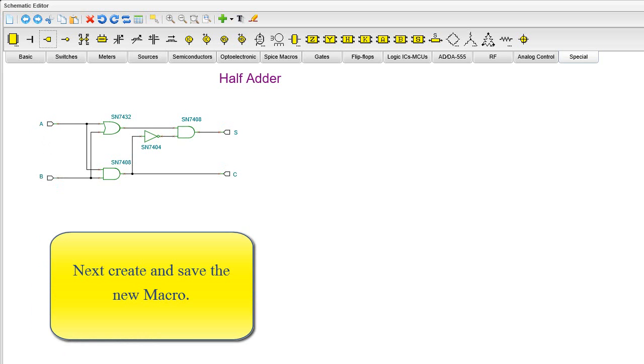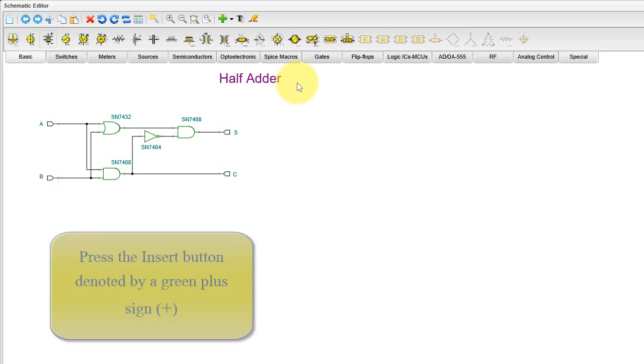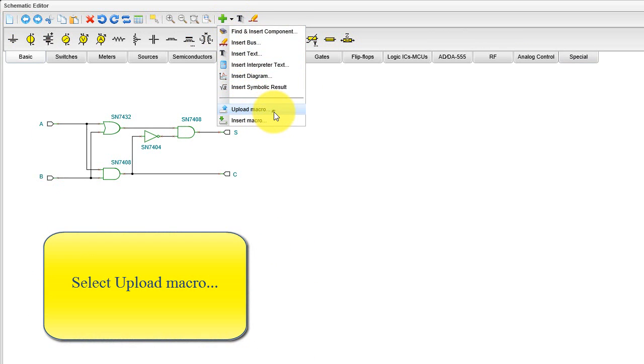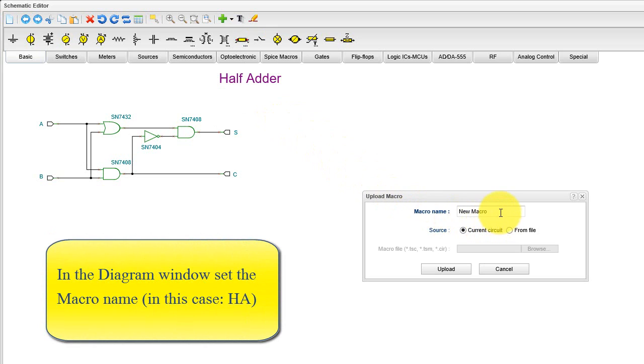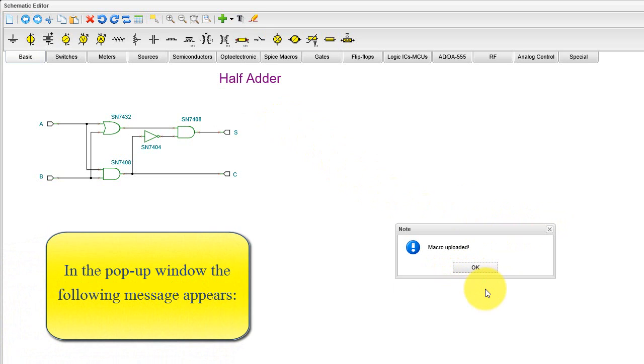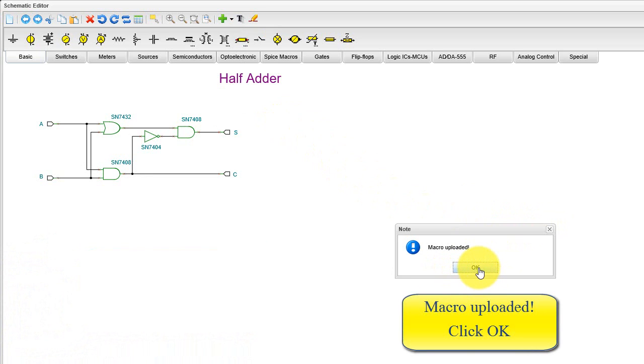Next, create and save the new macro. Press the Insert button, denoted by a green plus sign. Select Upload Macro. In the diagram window, set the macro name, in this case, HA. Then, click the Upload button. In a pop-up window, the following message appears, Macro Uploaded. Click OK.